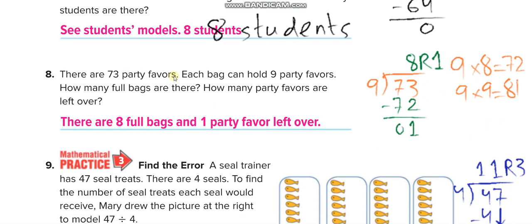There are 73 party favors and each bag can hold 9. Again the first digit is less than the divisor, so you take two digits together. Think: 9 times what equals 73 or less? 9 times 8 is 72 and 9 times 9 is 81, which is more than 73. So we take 9 times 8 equals 72 and write 8 above the second digit.